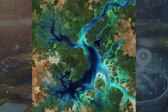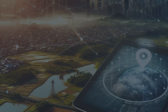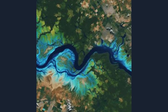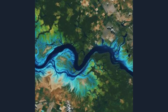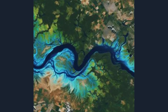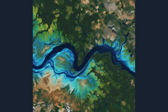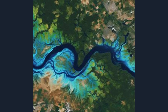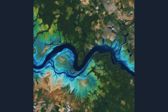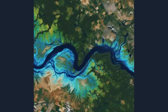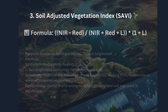NDWI is crucial for water resource management, flood monitoring, and even wetland mapping. It's a reliable tool for separating water from surrounding land and vegetation, making it easier to track changes in water bodies over time, such as during droughts or floods.